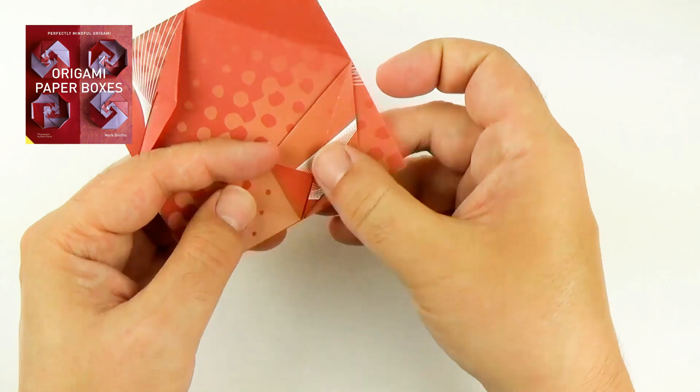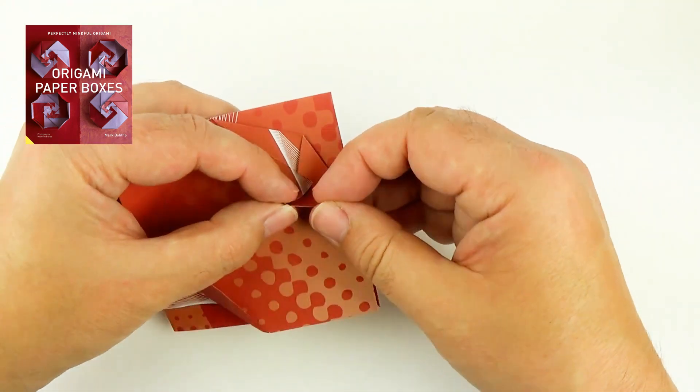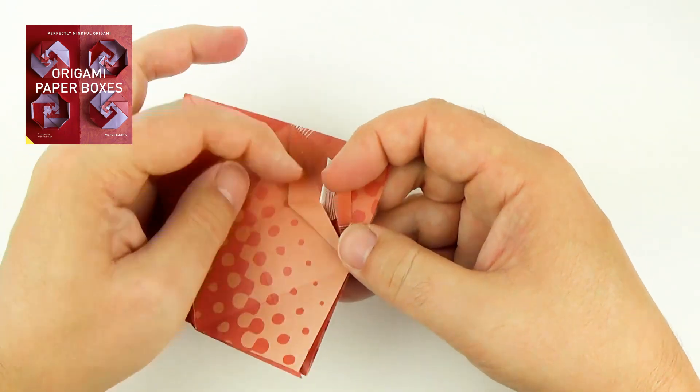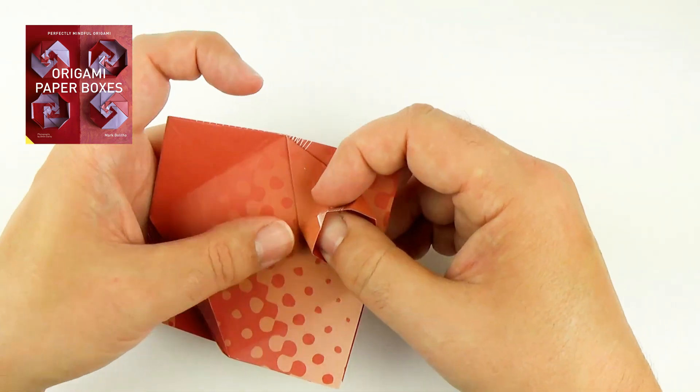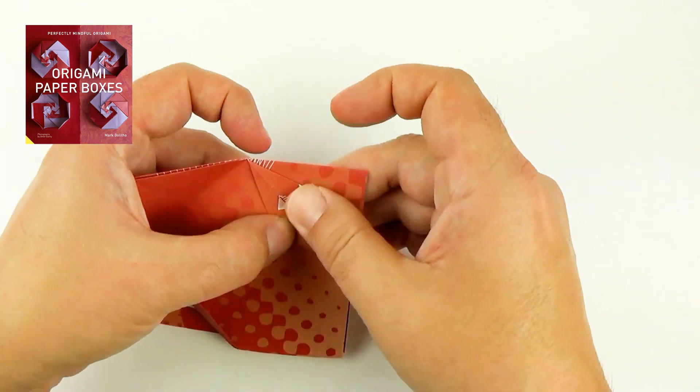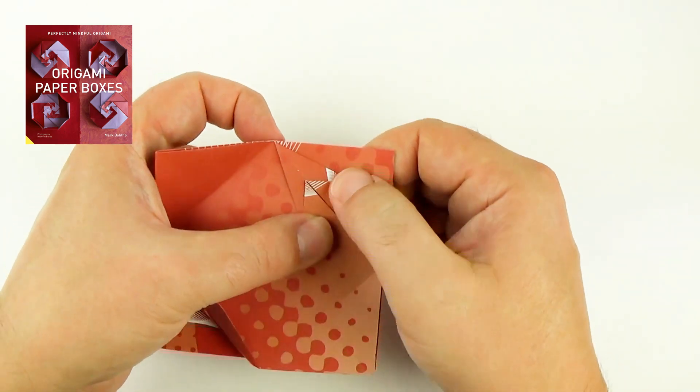And squash the point flat. Take the edges, fold them in. Fold the sides. Fold the sides. Open up. Fold the point together. Fold the sides in. Make a petal fold.